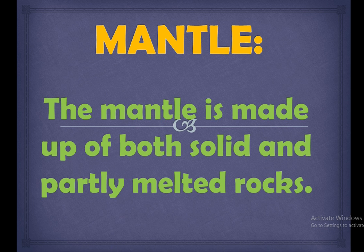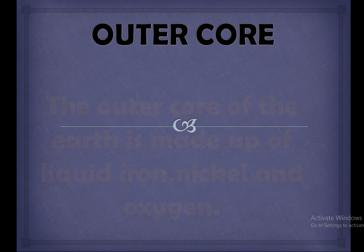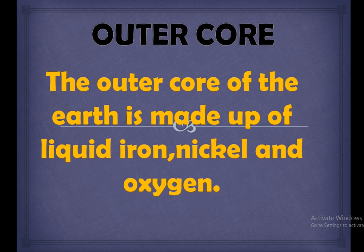Mantle: The mantle is made up of both solid and partly melted rocks. Outer core: The outer core of the Earth is made up of liquid iron, nickel and oxygen.